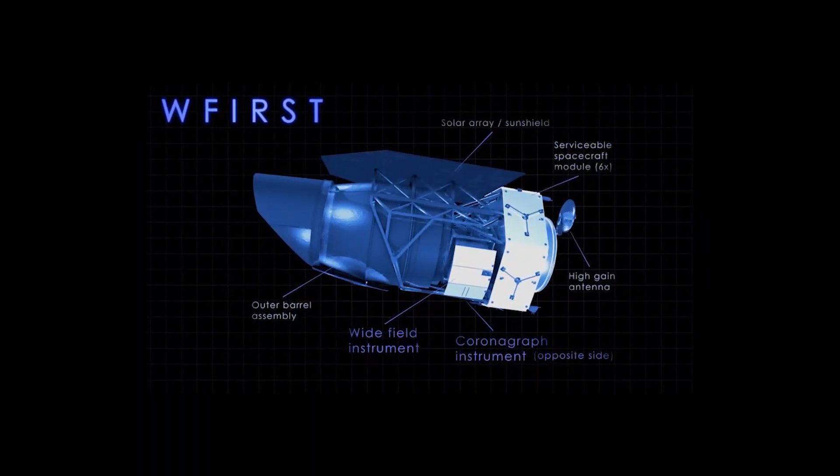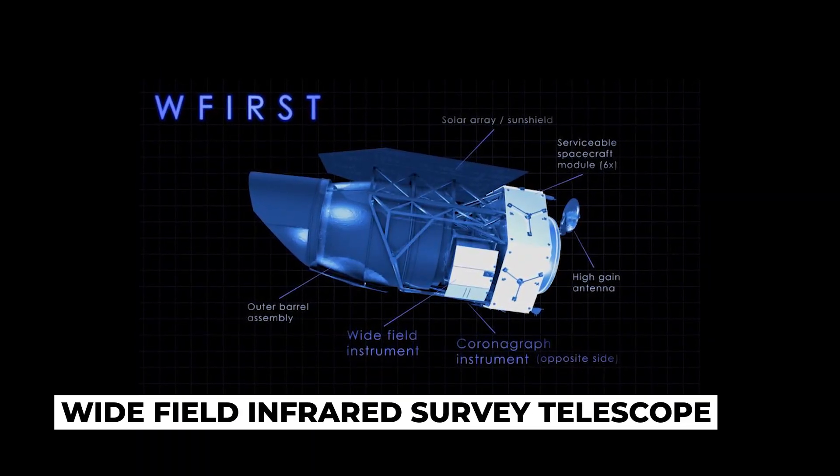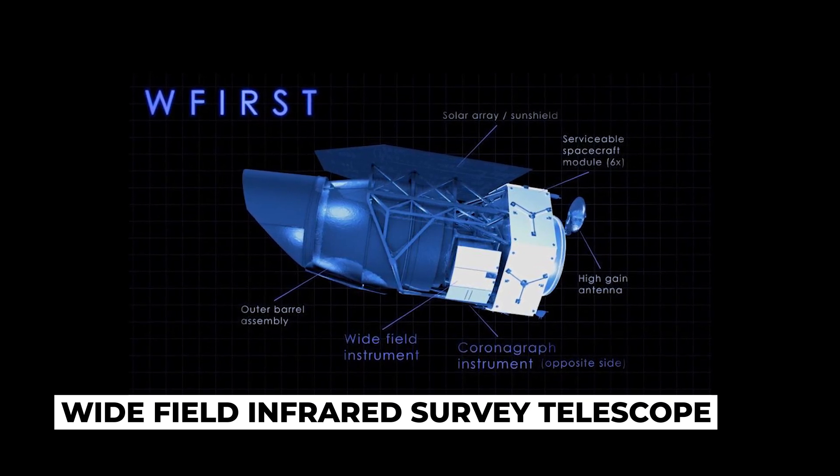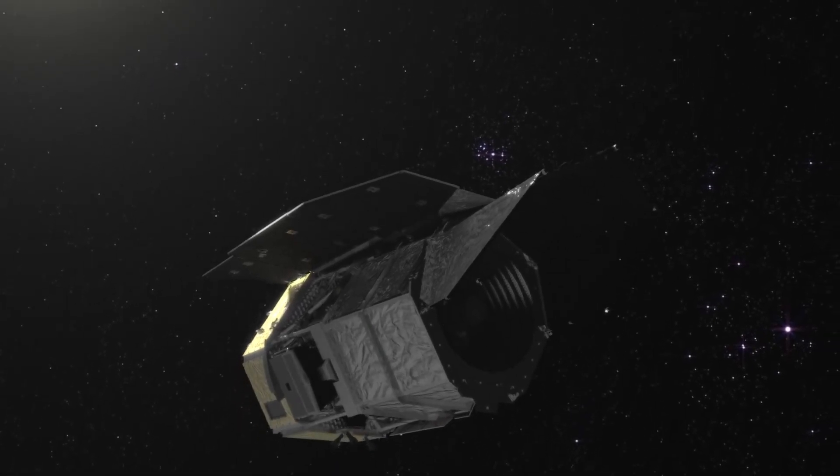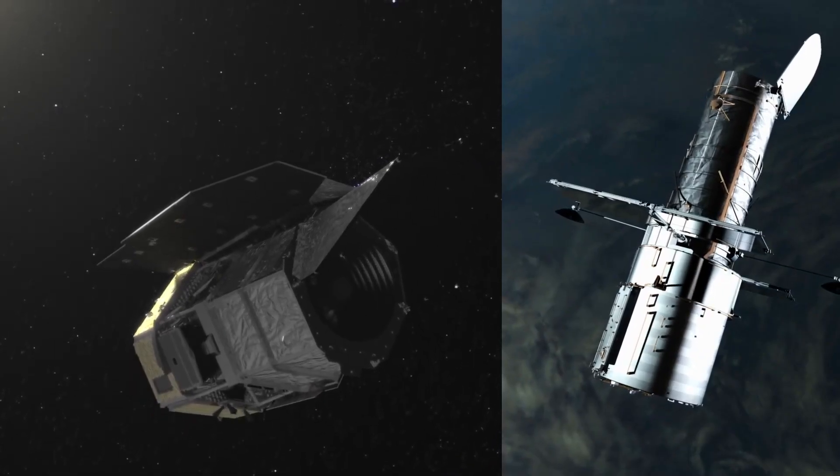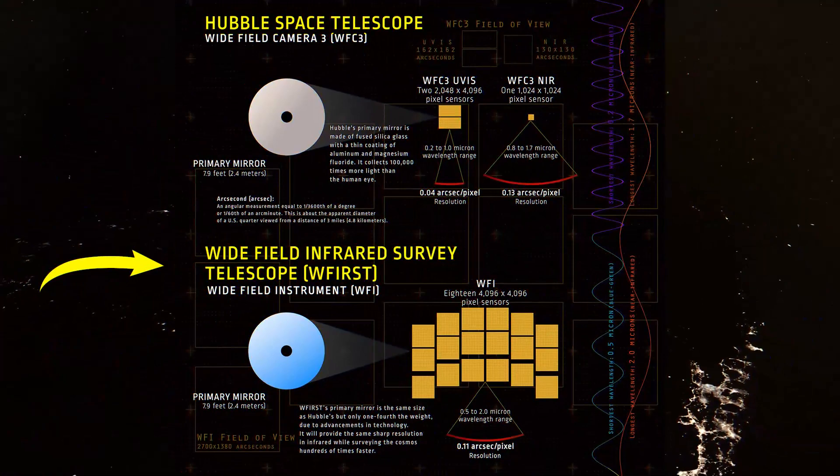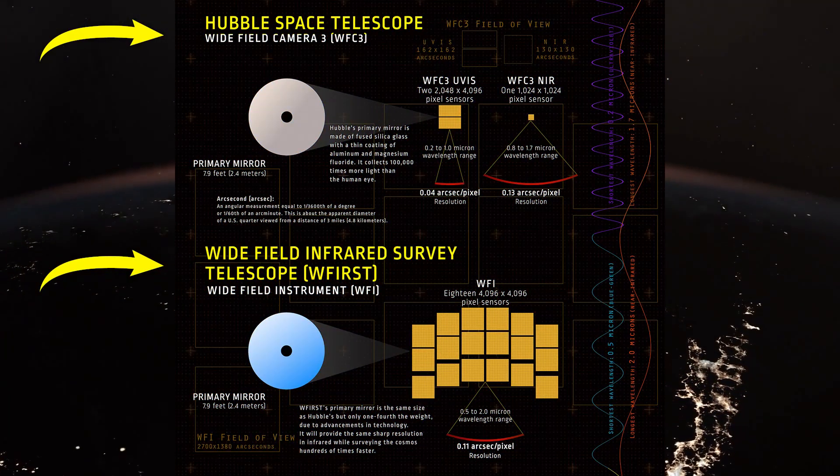Roman was previously called the Wide Field Infrared Survey Telescope. In many ways, the Roman Space Telescope can be considered a successor to Hubble, with a primary mirror measuring 2.4 meters, the same size as Hubble's. But it will have a huge field of view.